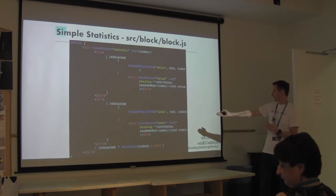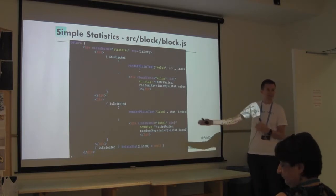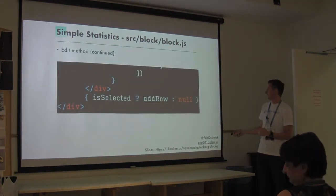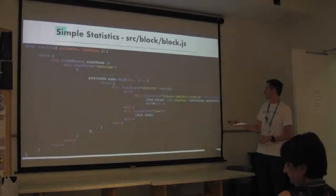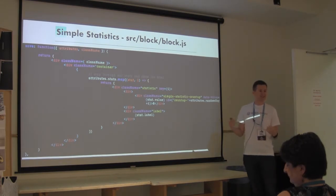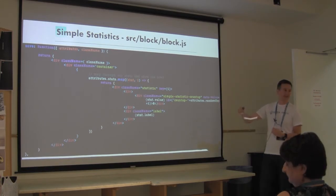If it is selected, we're going to use our helper method to make a plain text input; otherwise we'll just show some HTML - and the same thing for the label. If it is selected, we're going to show the delete stat button so you can delete the stats you want. At the bottom, if we're selected, we'll add the add-row button. It's really not that much code. If you imagine writing that in jQuery, you'd probably write 10 times the amount of code. The save function is very similar - just some HTML, map through the stats, put them on the page.